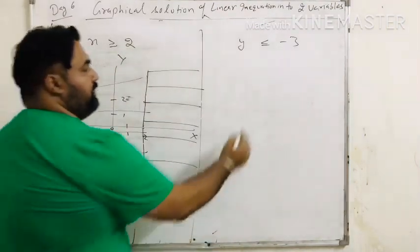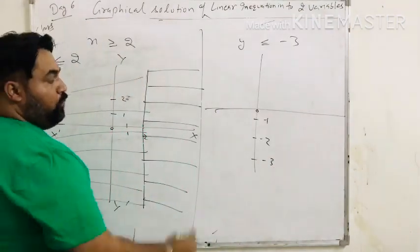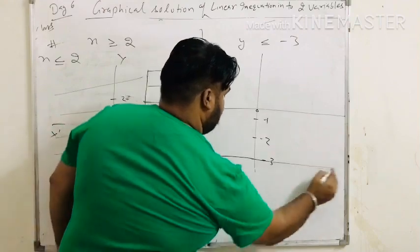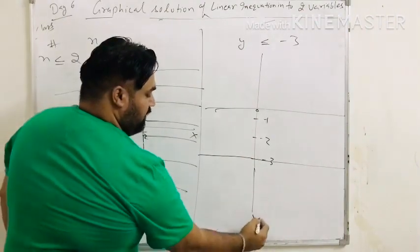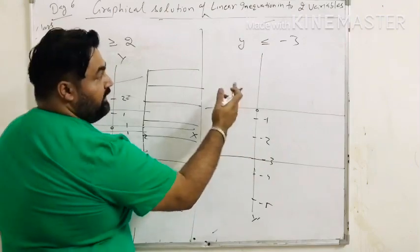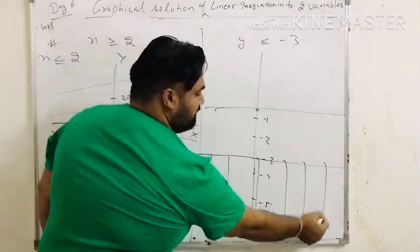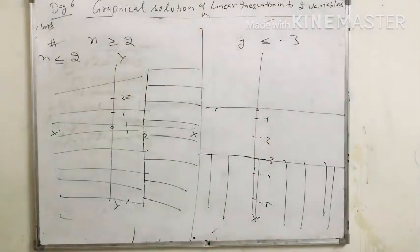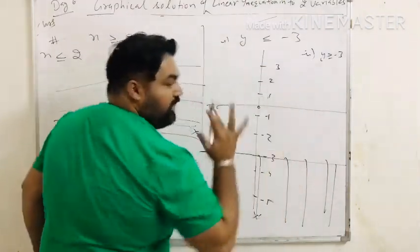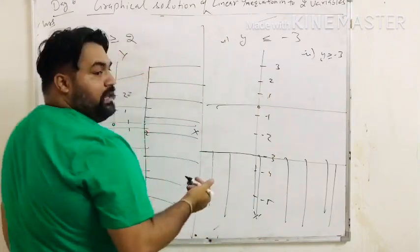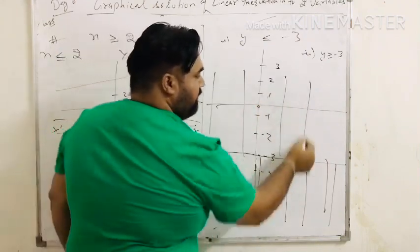In this question, y equals to minus 3. Plot the horizontal line at y equals to minus 3. y less than minus 3 means minus 4, minus 5, minus 6 — this area below the line. Now if y greater than or equal to minus 3: y equals to minus 3 is the boundary line. The value of y greater than minus 3 means minus 2, minus 1, 0, 1, 2, 3 — this is the shaded region above the line.